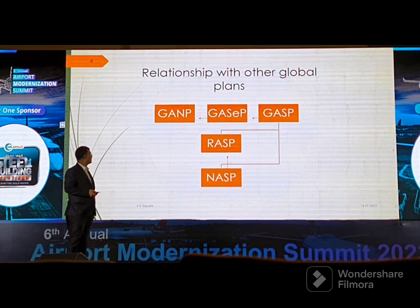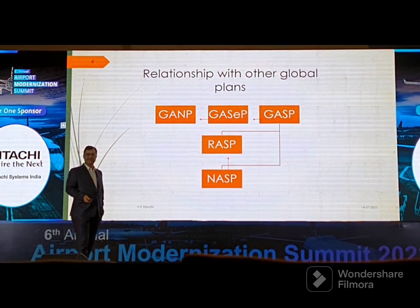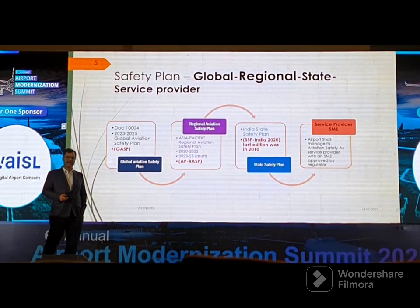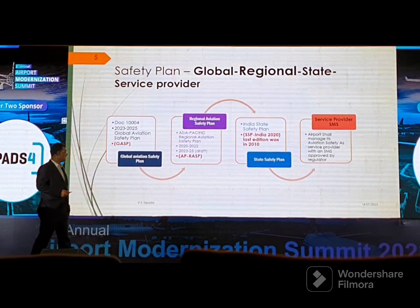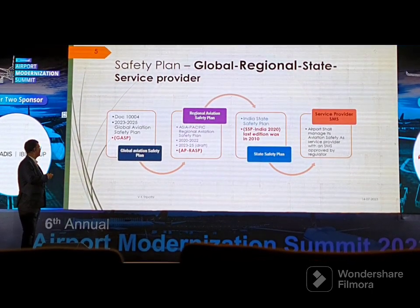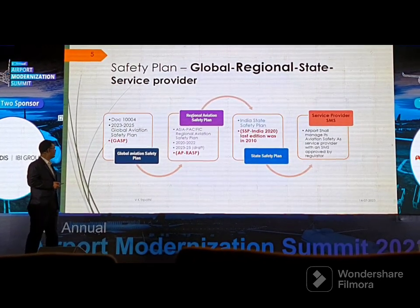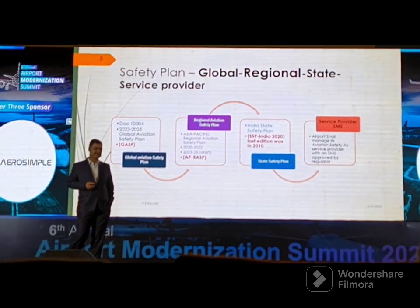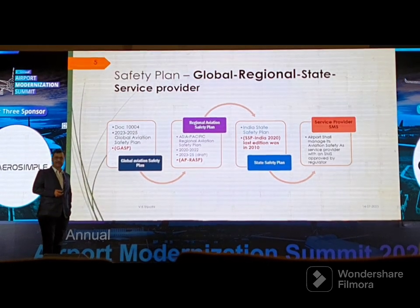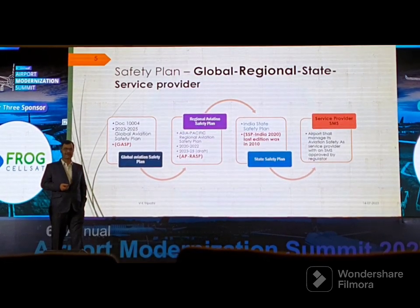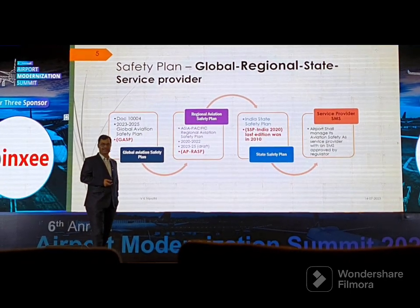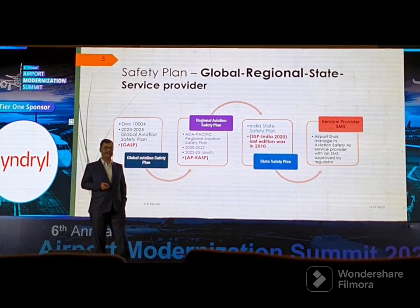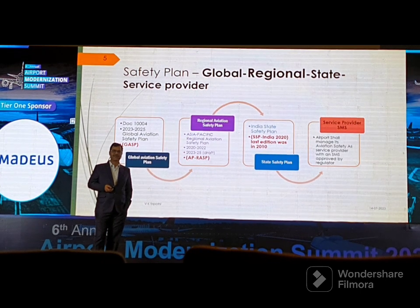The Global Aviation Safety Plan for 2023–2025 is documented as Doc 10004. The Regional Aviation Safety Plan 2023–2025 is still under draft and has not been finalized. India's State Safety Plan was released by DGCA very recently, after around ten years. Service providers must deliver through a logical and categorized Safety Management System document.